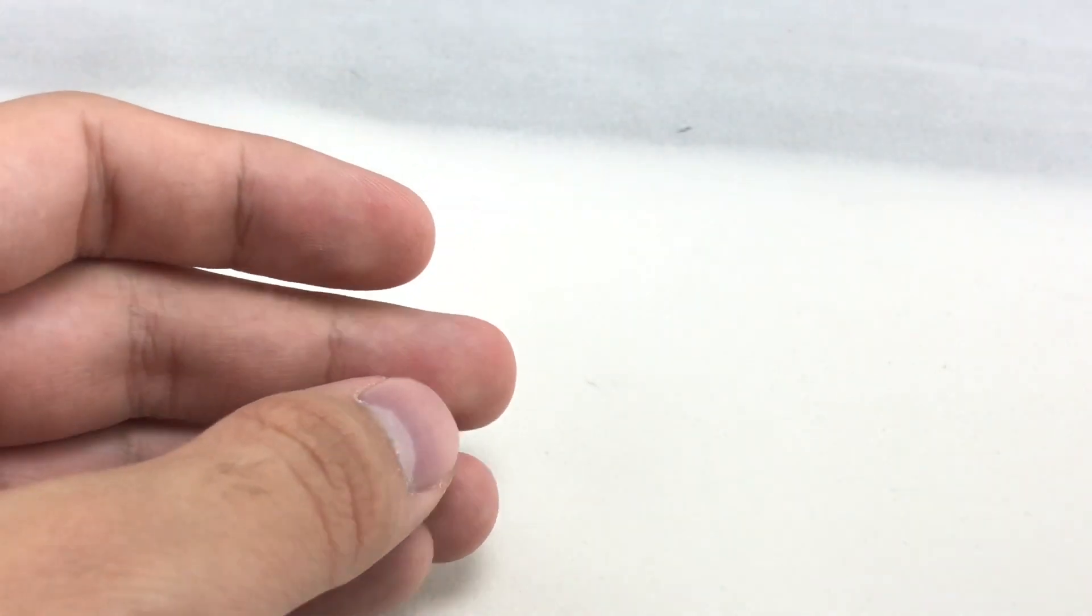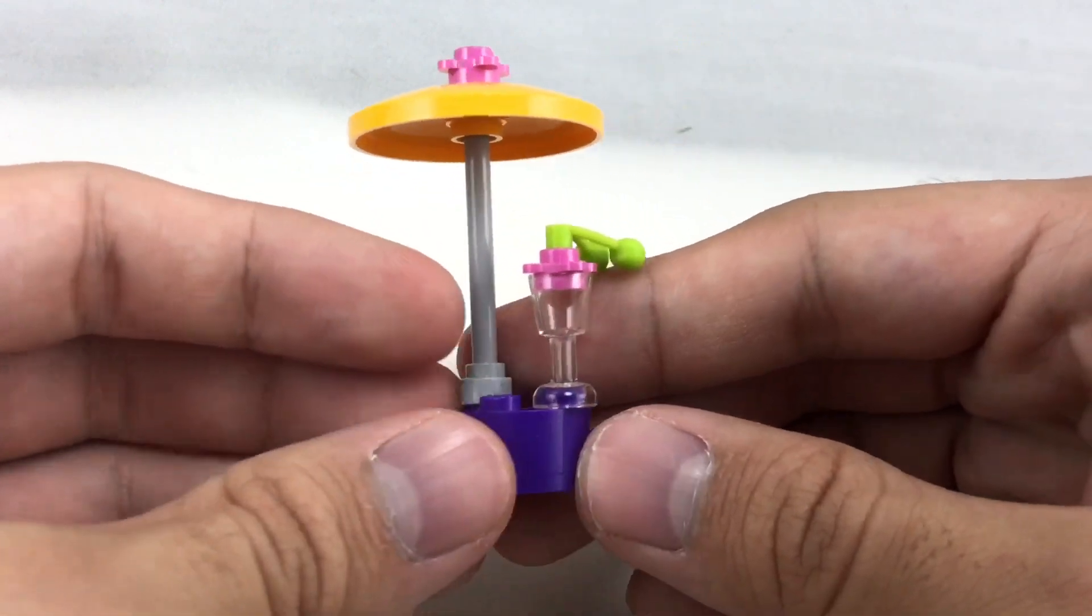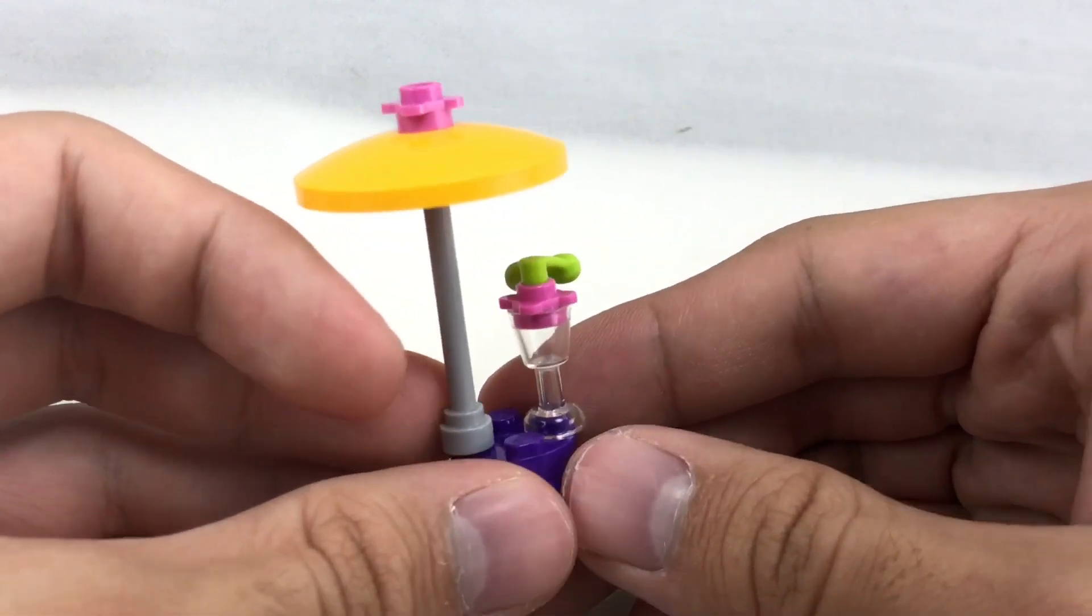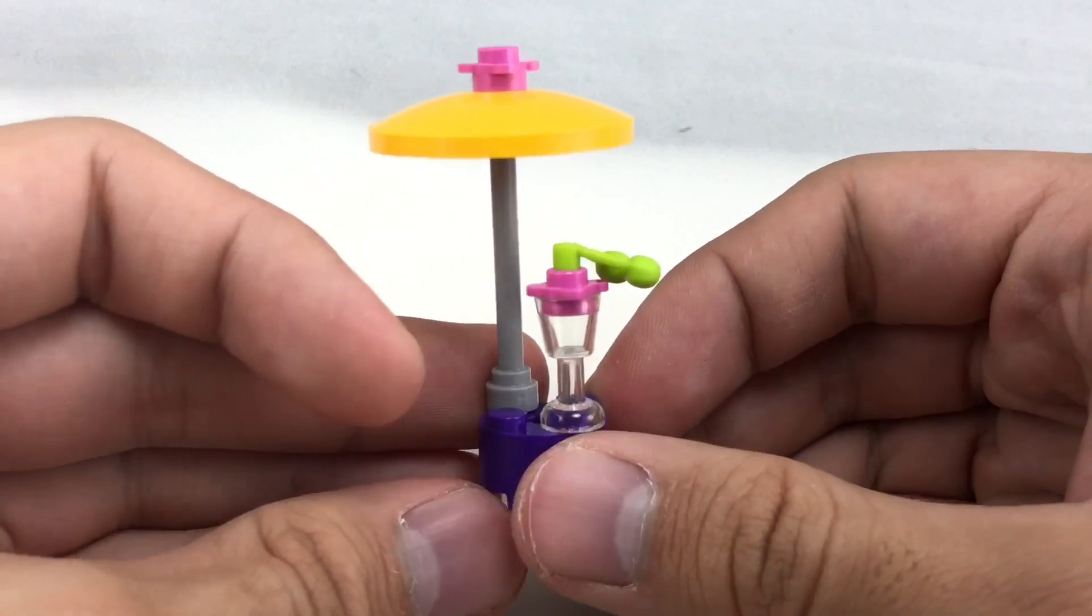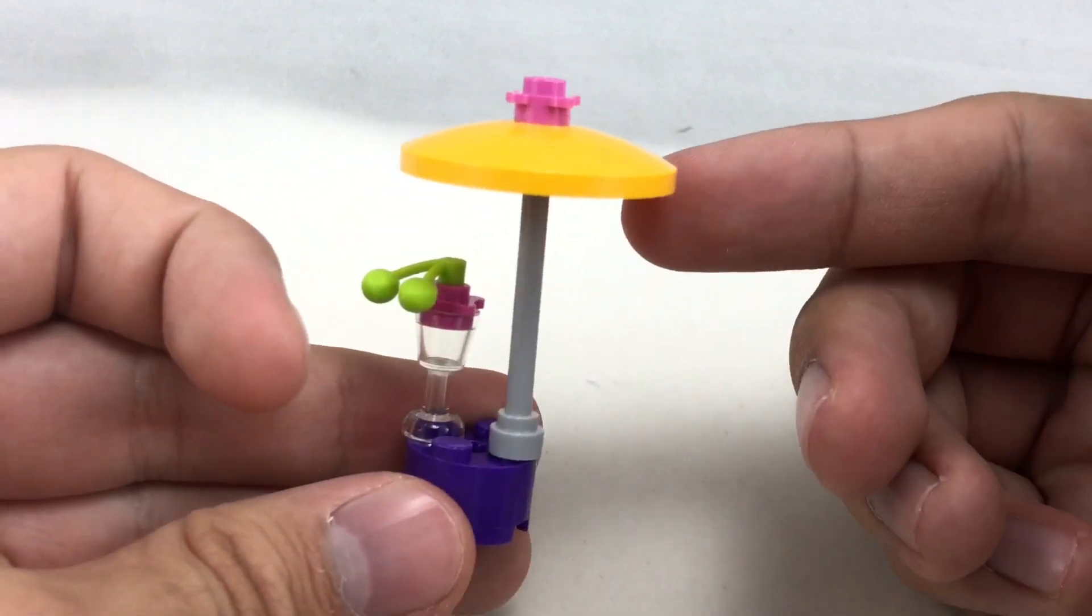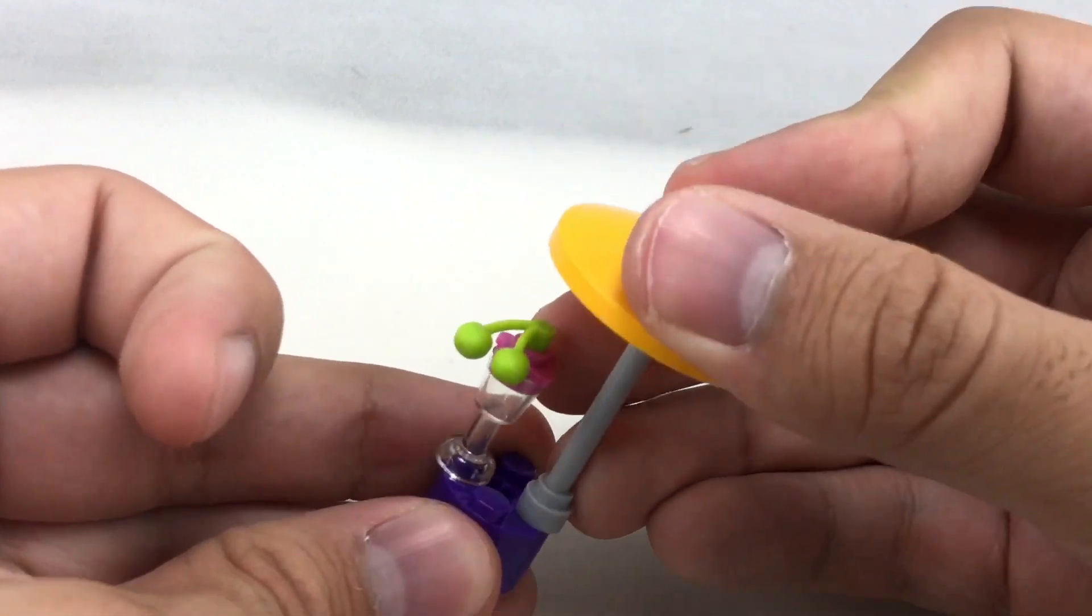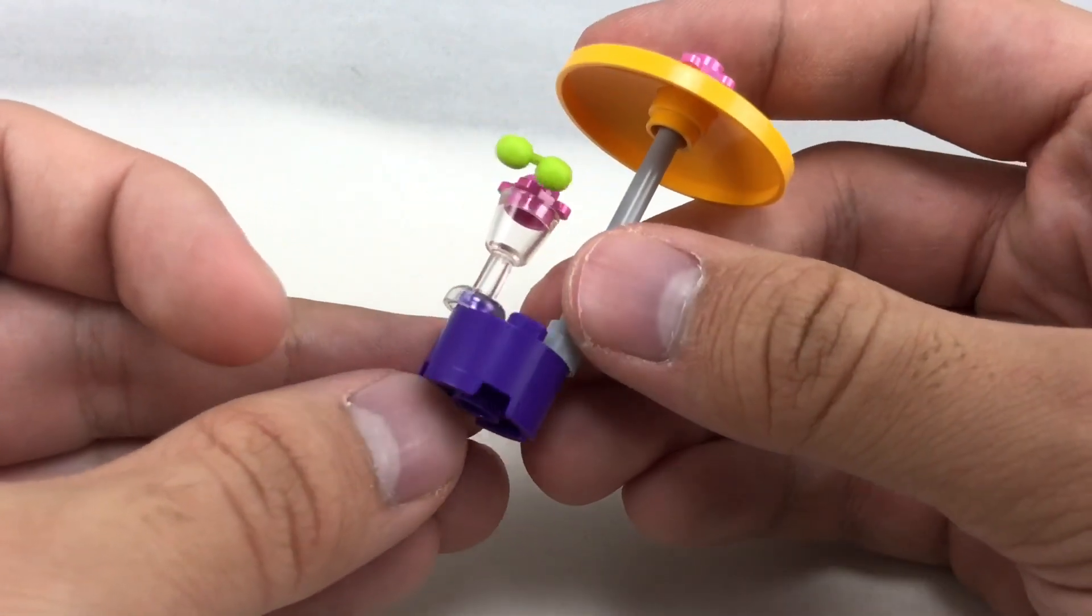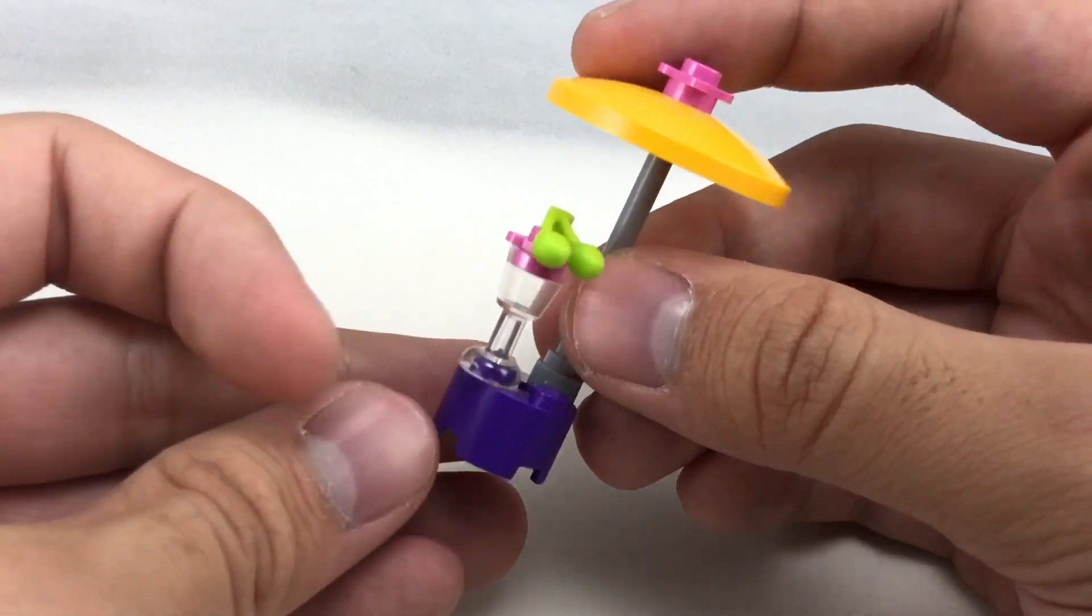And lastly they have the chilling area which has what seems to be maybe a little martini or I guess a fruit drink because this is supposed to be kids. Emma is probably like 15. And the design for this uses a nice umbrella and a little circular 2x2 in purple so that's kind of interesting.